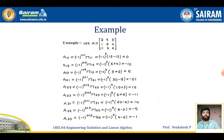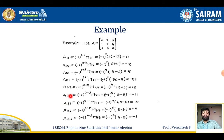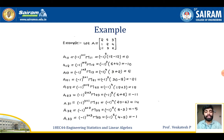For A22, i=2, j=2: (−1)^(2+2) × M22 = 15. For A23, i=2, j=3: the answer is −11. For A31, i=3, j=1: the answer is 14. For A32, i=3, j=2: the answer is −5. For A33, i=3, j=3: the answer is −1. This completes finding all the cofactors.